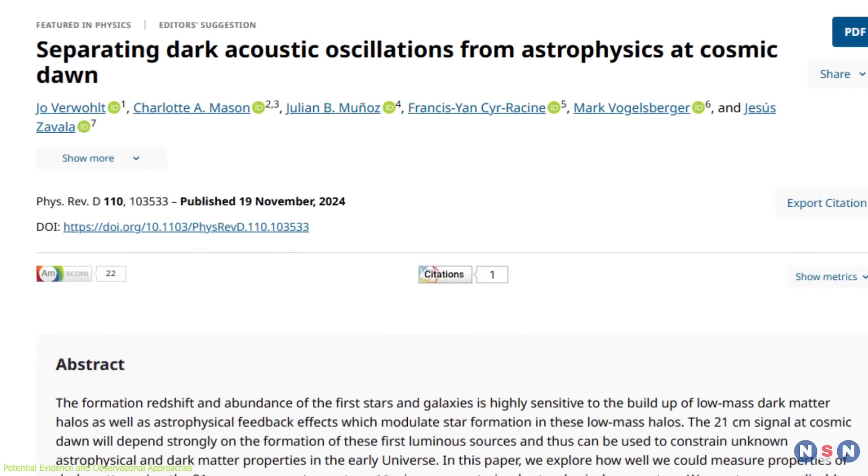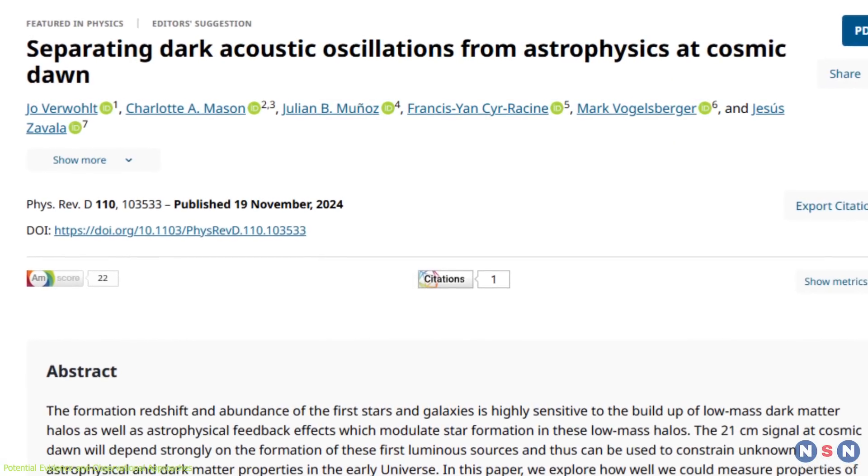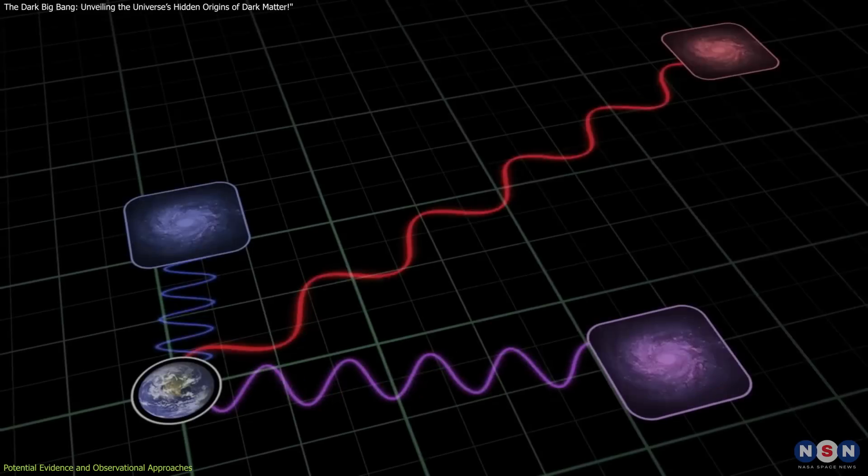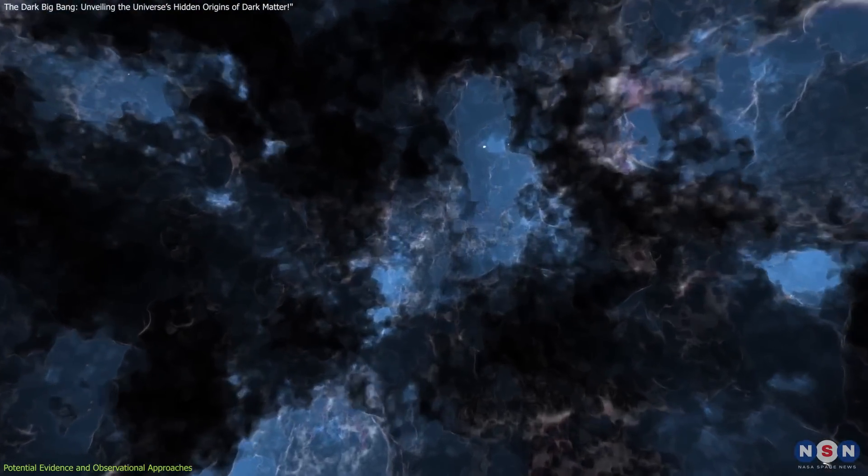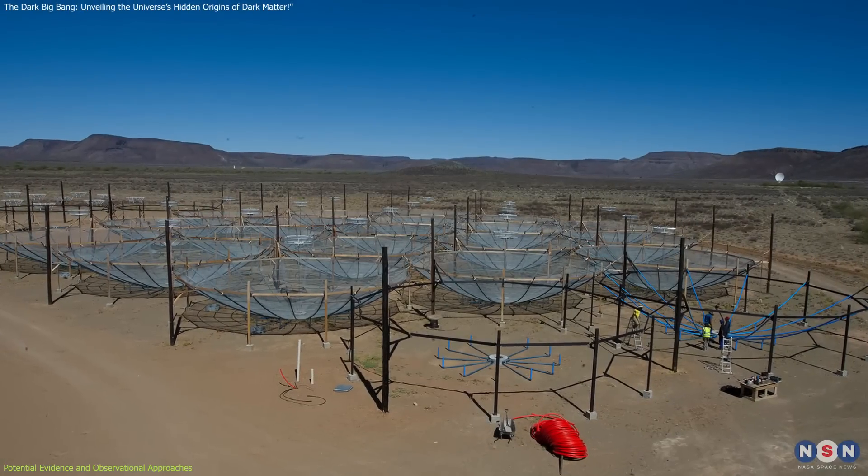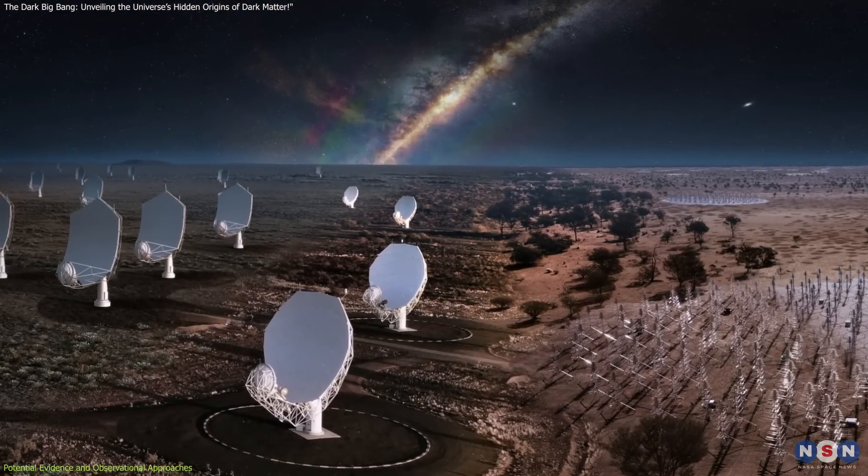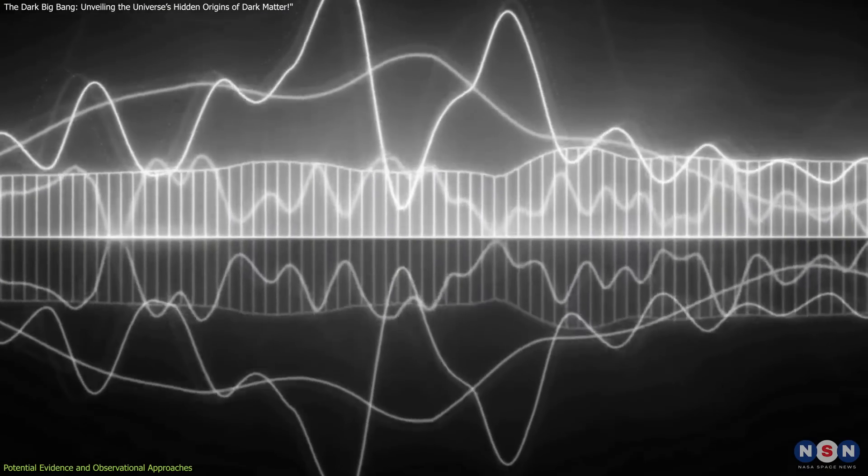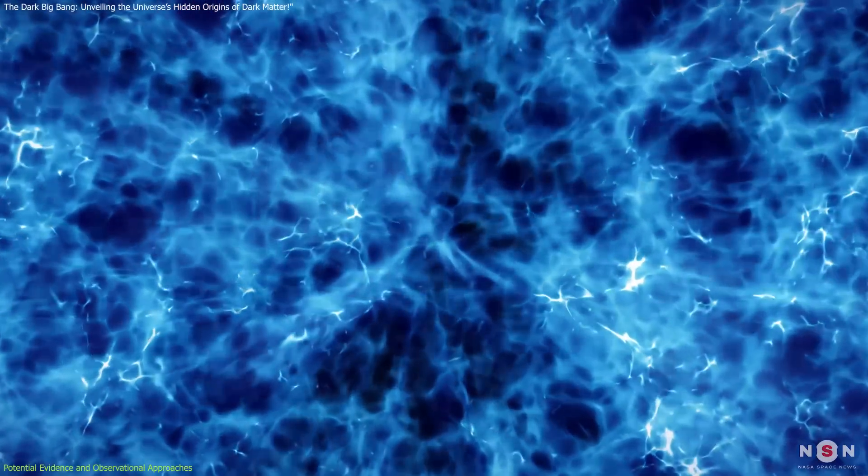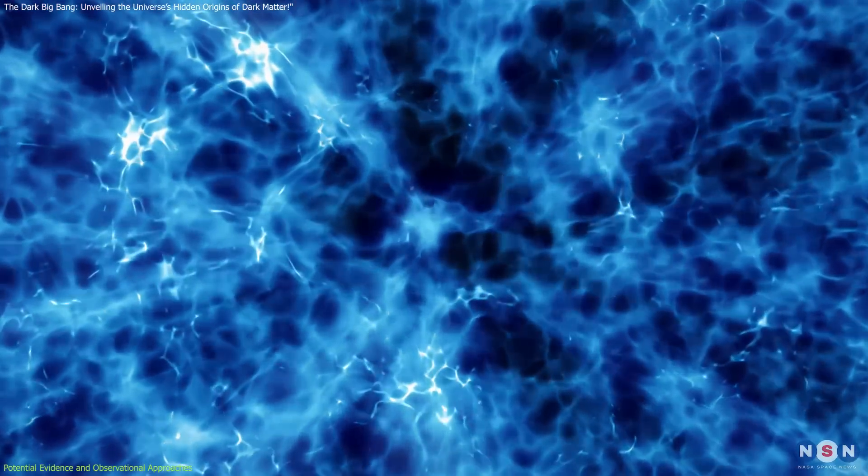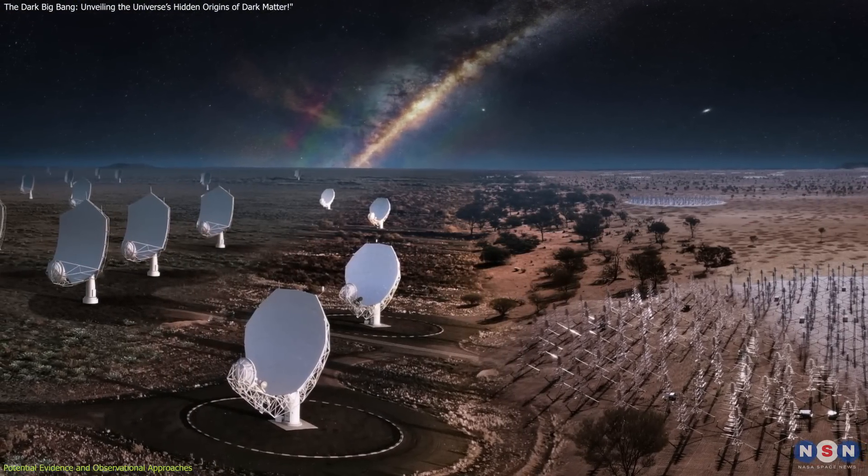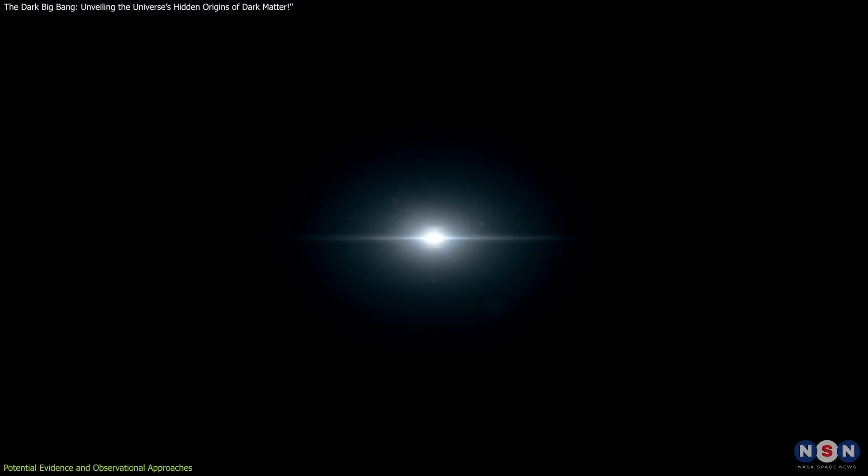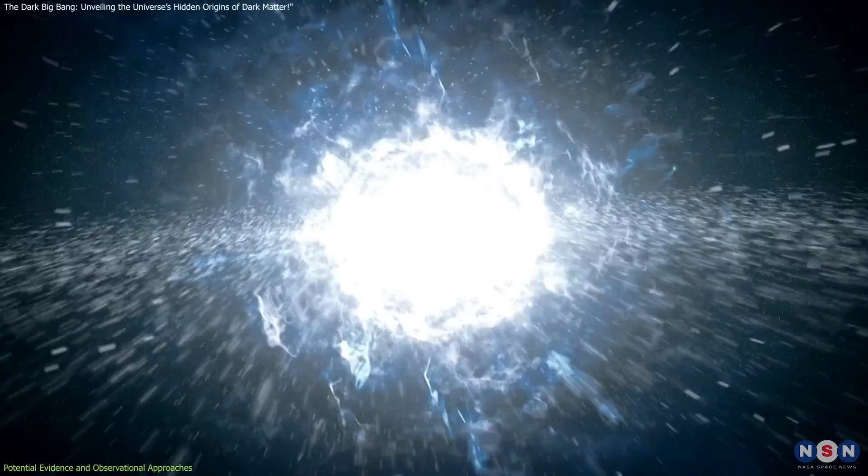A team led by Joe Vervolt of the University of Copenhagen is exploring how the 21-centimeter power spectrum at high redshifts could reveal dark matter's role during cosmic dawn. Instruments like the HERA telescope in South Africa and the SKA are critical for these observations. Subtle fluctuations in the 21-centimeter line could provide evidence of dark acoustic oscillations, density waves in the dark matter halo that shaped early galaxies. These advanced tools push the boundaries of what we can observe, bringing us closer to confirming whether the Dark Big Bang really happened.